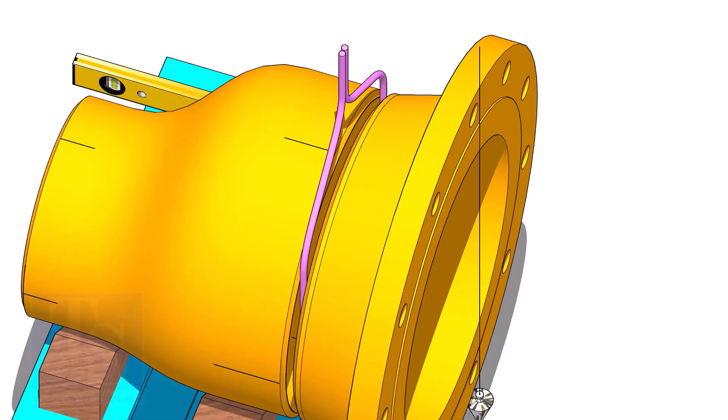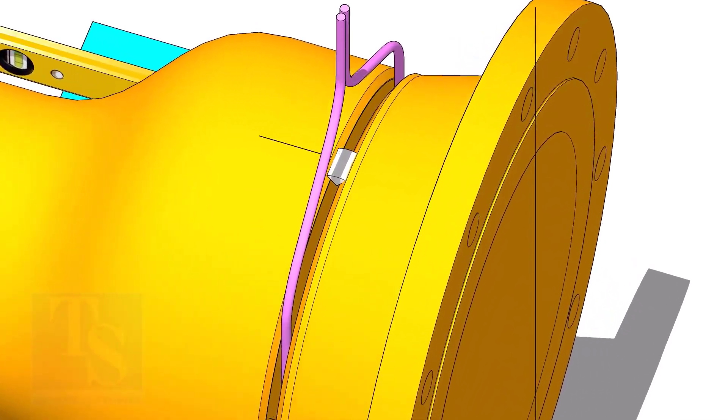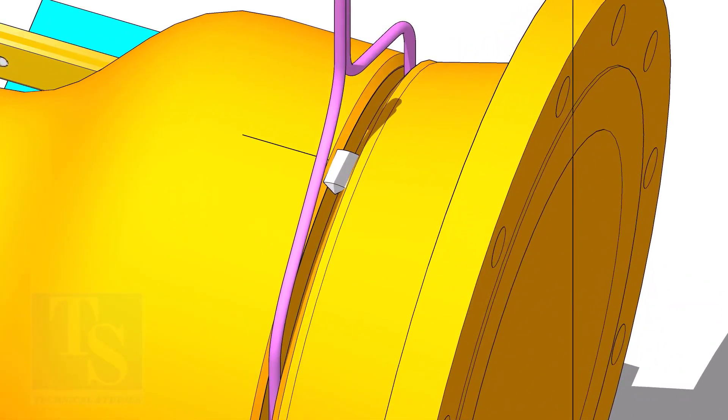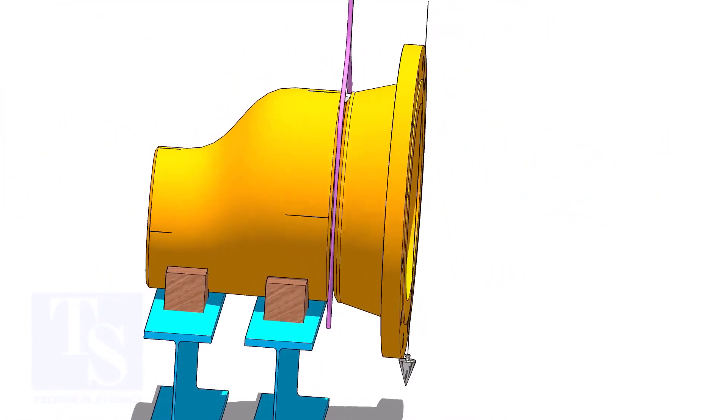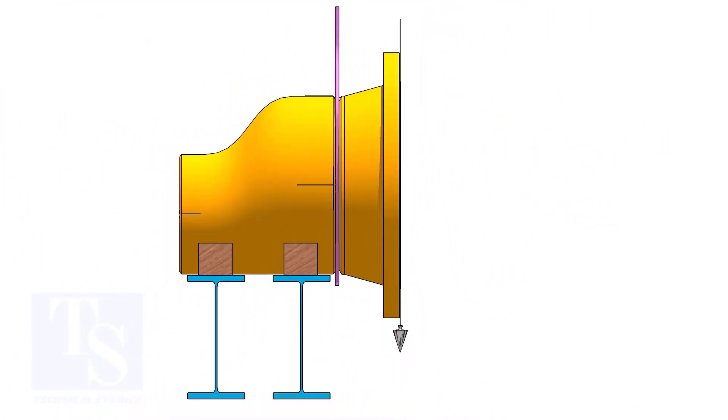Tack weld on the top side of the joint. Check the vertical plumbness, if correct, tack weld at the bottom side.